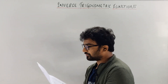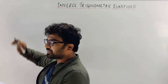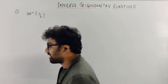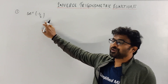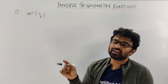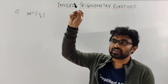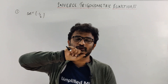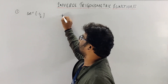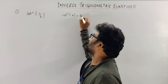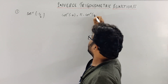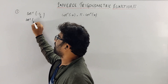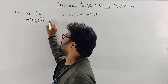First question: find the principal value of cos⁻¹ of minus one-half. You can write this using the property: cos⁻¹(−x) = π − cos⁻¹(x). So cos⁻¹(−1/2) can be written as π − cos⁻¹(1/2).